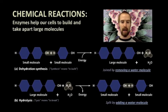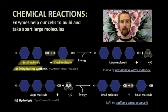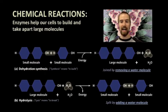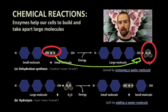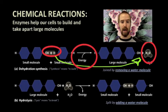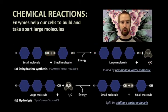When small molecules, or monomers, combine to form large molecules, or polymers, this is called dehydration synthesis. We call it a dehydration reaction because water is produced as a byproduct — as though water was removed from the smaller molecules — so we are synthesizing a polymer by removing a water molecule. This kind of reaction absorbs energy, and this energy is then stored in the chemical bonds of the large molecules produced.